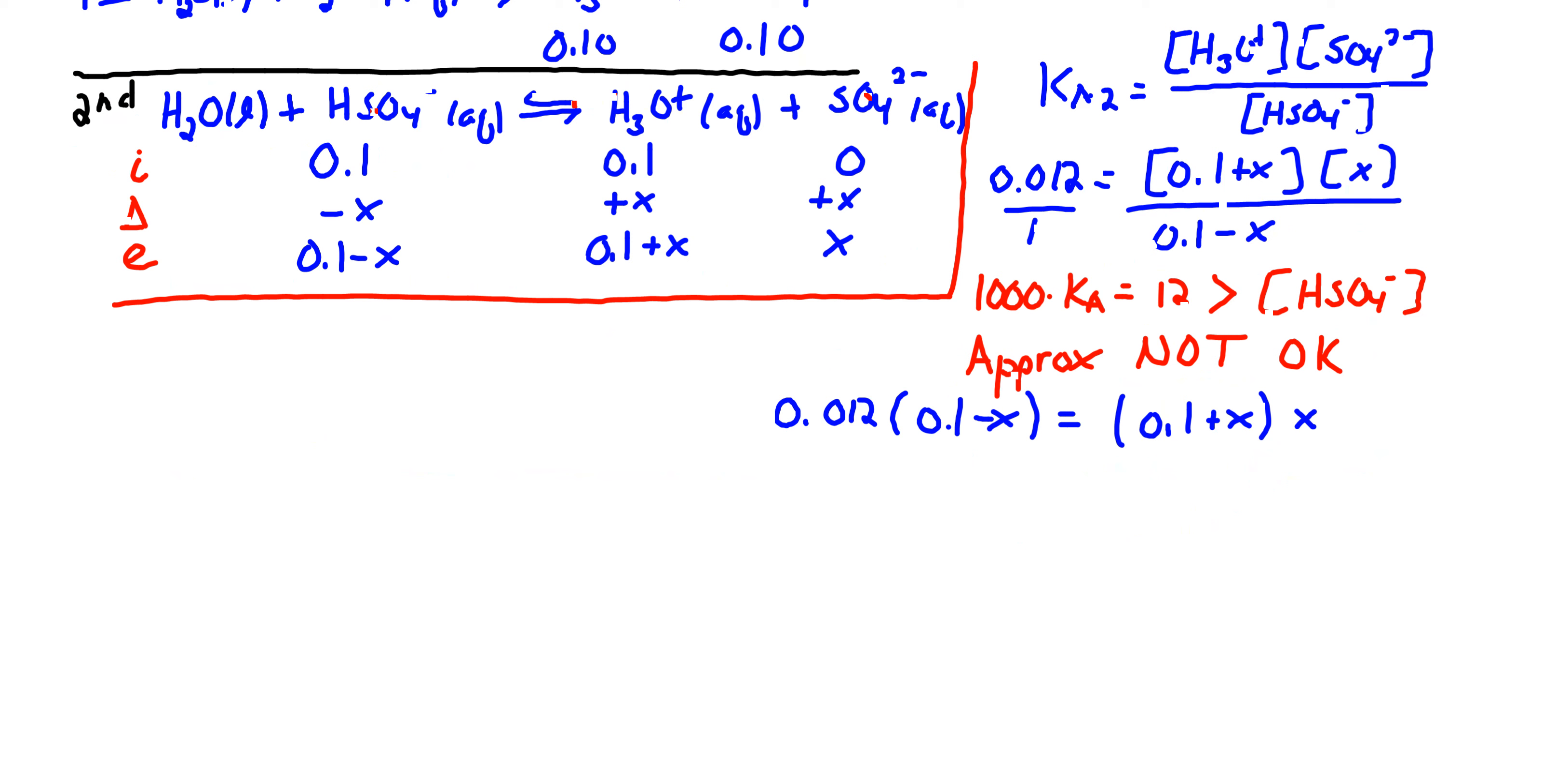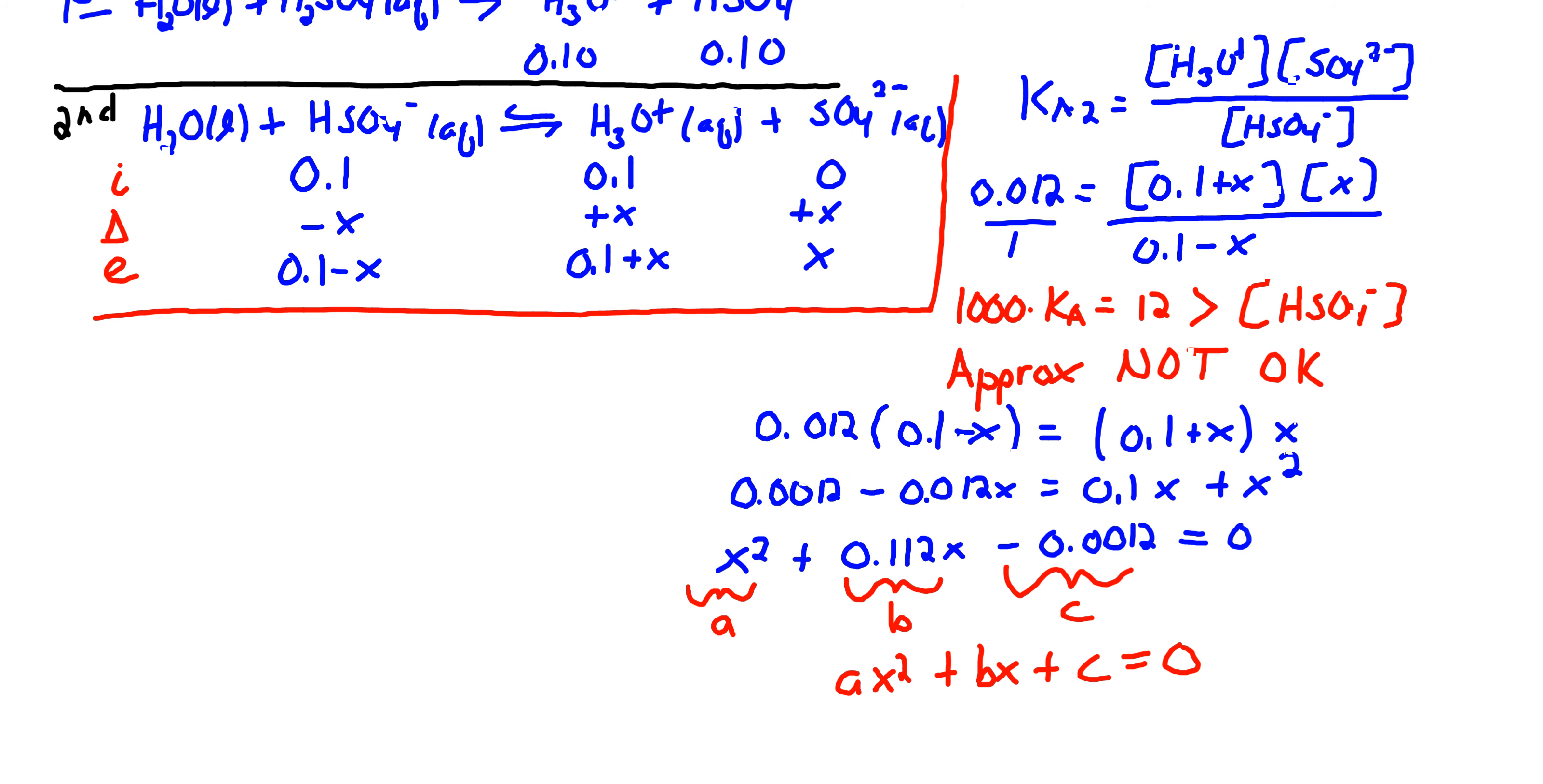0.012 times this quantity equals the product of these two. We're going to need to solve this using the quadratic equation. We need to put this in the form ax² + bx + c, so we can solve this to get our two roots.